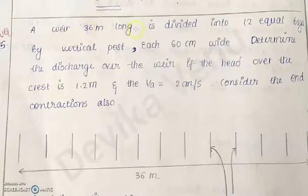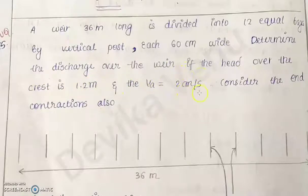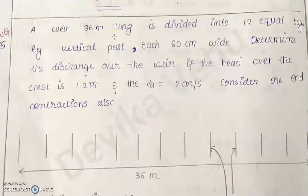Example problem: A weir 36 meters long is divided into 12 equal bays by vertical posts, each 60 centimeters wide. Determine the discharge over the weir if the head over the crest is 1.2 meters and the velocity of approach is 2 m/s. Consider the end contractions also. We will draw a figure with the given data — the weir is 36 meters with two marked ends.